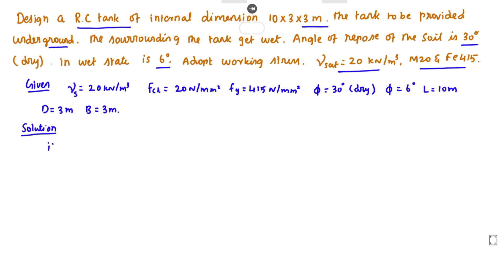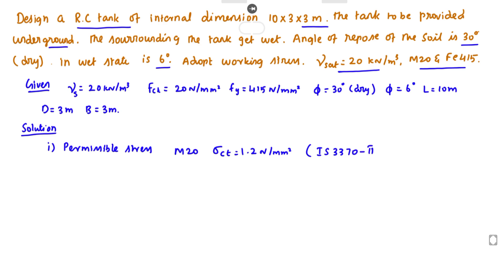The first step is to find out the permissible stresses. For M20 grade concrete, sigma CT value is 1.2 N per mm square. This value is obtained from IS 3370 part 2, table number 1, page number 7. For Fe415 steel, sigma ST equals 150 N per mm square.